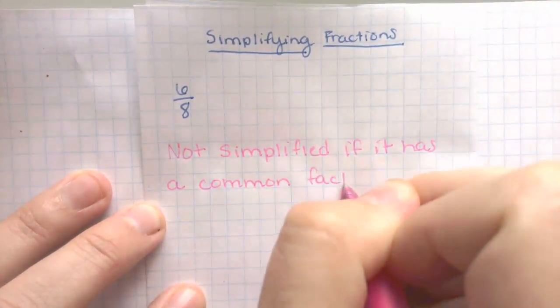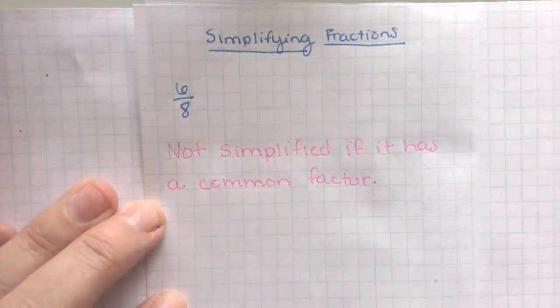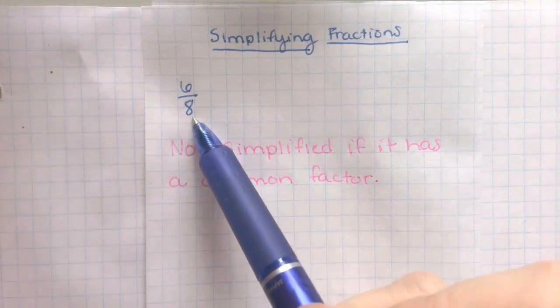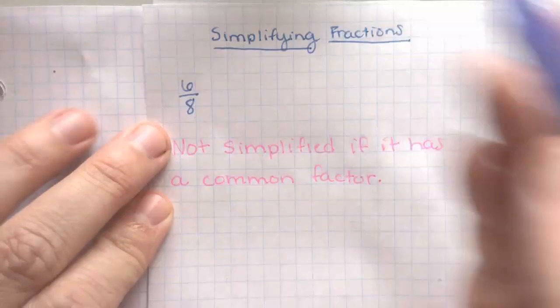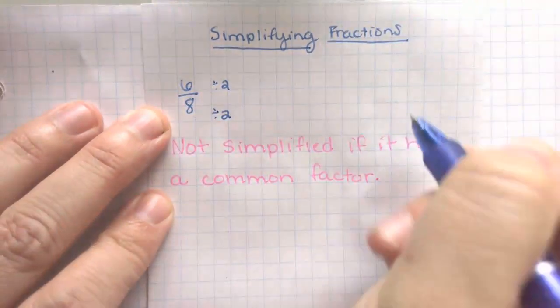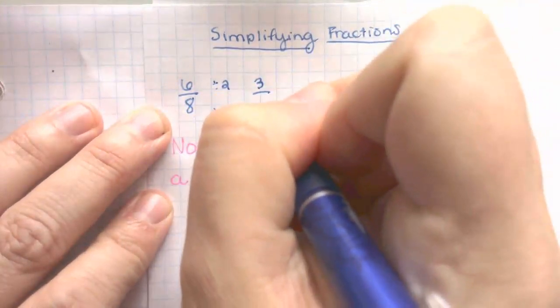So when we look at the numbers 6 and 8, they do share a common factor. They both can be divisible by 2. So that would be their common factor. You can do it two different ways. You can either divide both by 2, and you're going to get 3 over 4.